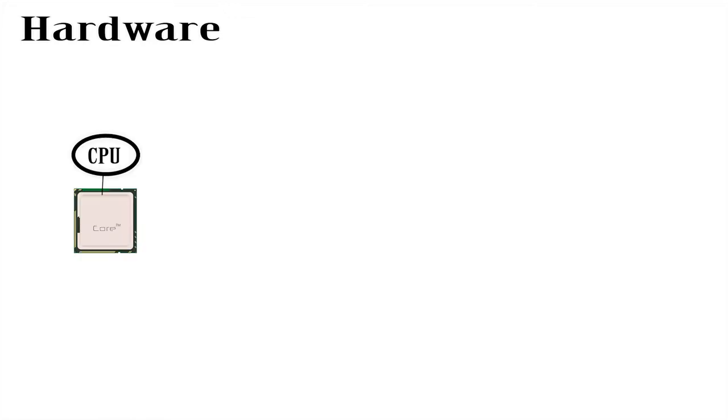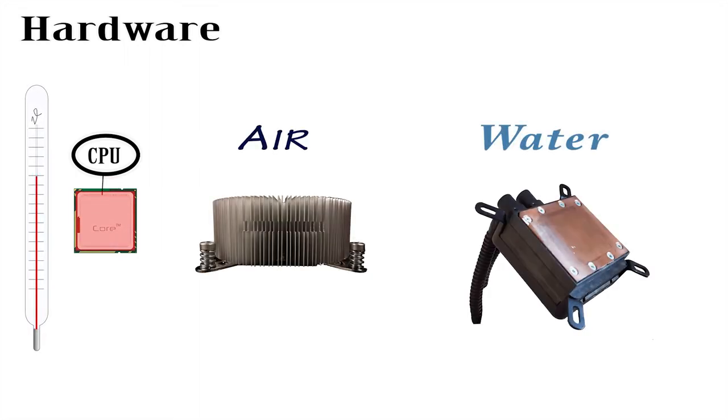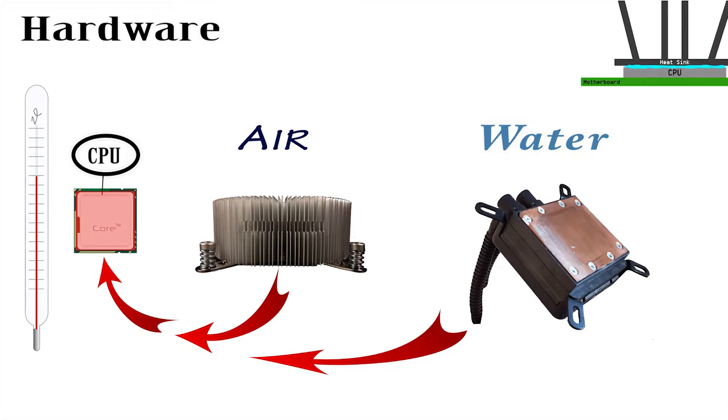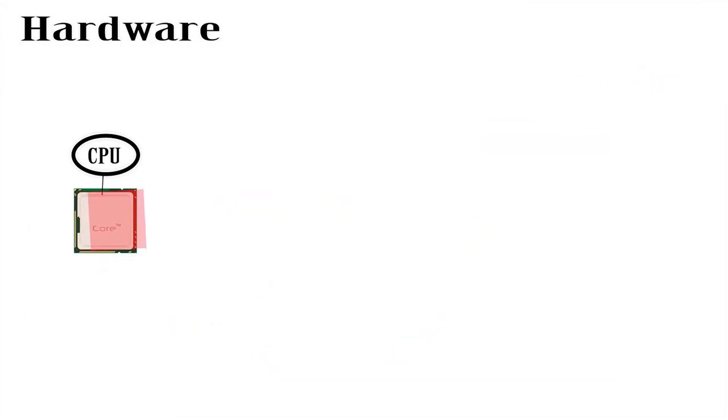You have your CPU that produces heat when it's being used. With both air and water coolers, you're going to have a metal block, known as a heat sink, to make direct contact with the CPU, along with some thermal paste to ensure solid contact, which I explain in another video. The heat generated from the CPU will flow into the heat sink.